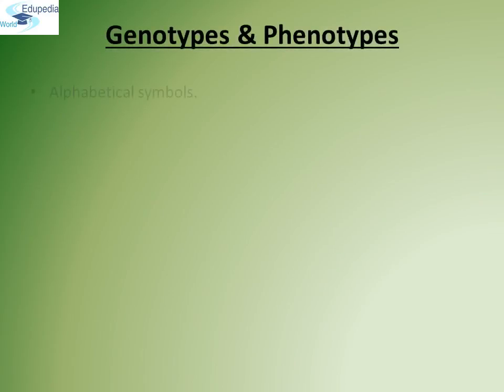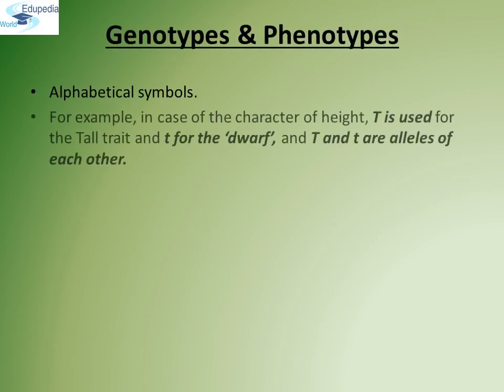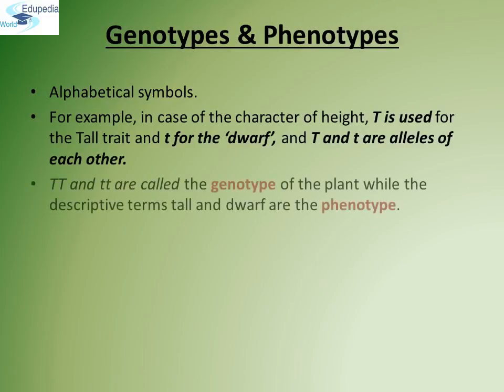Genotypes and phenotypes: alphabetical symbols are used to represent each gene. For the character height, capital T is used for tall traits and small t is used for dwarf traits. Capital T and small t are alleles of each other. Mendel proposed that in a true breeding tall or dwarf variety, the allelic pairs of genes for height are identical or homozygous. Capital TT and small tt are called the genotypes of the plant, while the descriptive terms tall and dwarf are the phenotypic terms.